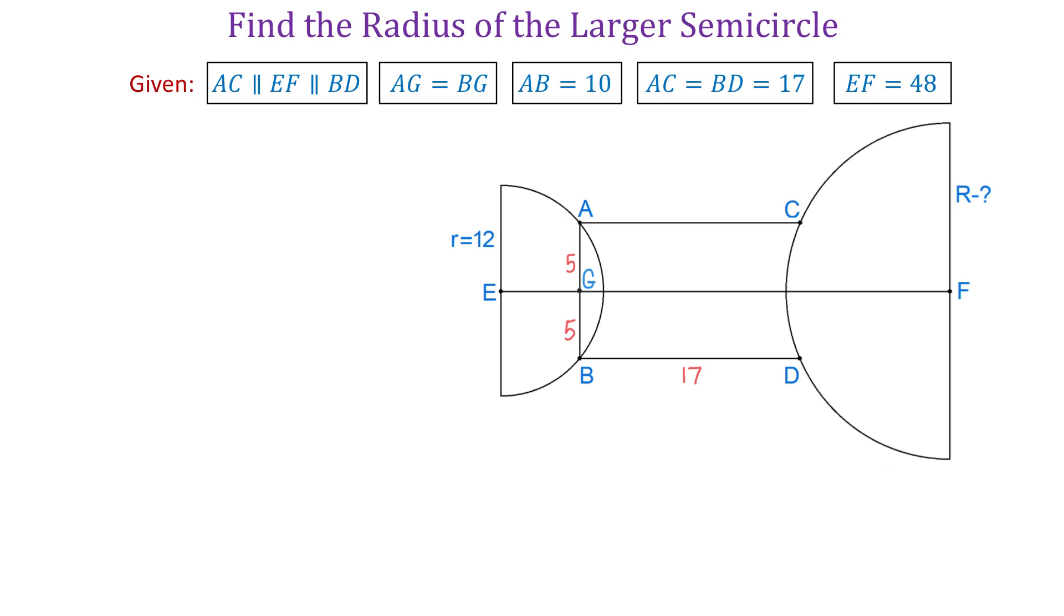To understand the process, let's start by connecting the points C and D and let this point be point H. Then if AG is 5 units, then CH is also 5 units. Now let's also connect the points C and F. And now we have a right triangle where the hypotenuse CF is also the radius of this semicircle. In this right triangle, one side is 5 units and if we would know this side, then we would use the Pythagorean theorem to find the hypotenuse.